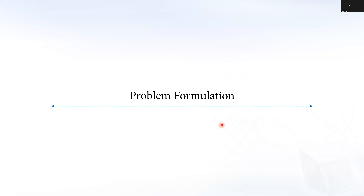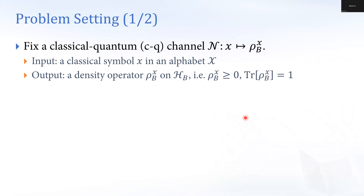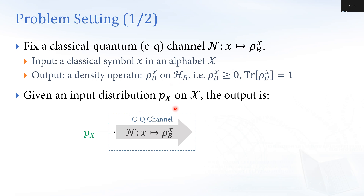Let me jump into the problem formulation of quantum soft covering directly. We consider a classical-quantum channel which takes a classical symbol x to output a density operator on some Hilbert space B. We don't put any assumptions on this Hilbert space B. Given an input distribution — probability distribution p_x — the output state is the average of the density operators. Let's denote this as ρ_B.